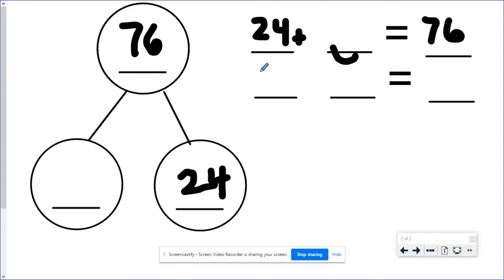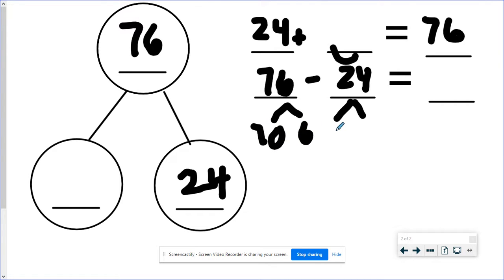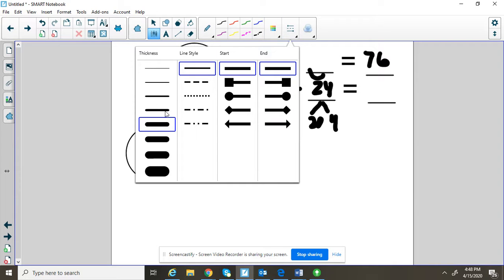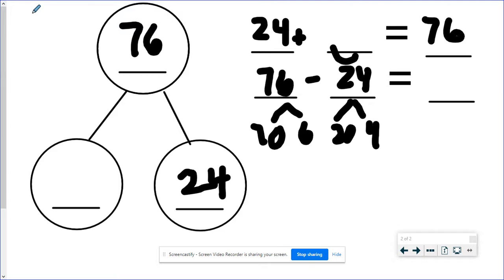If I have the whole and I have one of the parts, I can use subtraction here because I could take this whole number 76 and then I can subtract 24 and I will get my missing part. Because if I have one of the parts and I have the whole, I can say a whole take away the part will give me the missing part. Now I'm ready to branch. 76 branches into 70 and 6. 24 branches into 20 and 4. My pen's a little thick, guys. Let me fix that so we can see a little bit better.